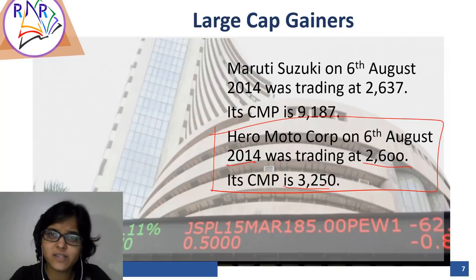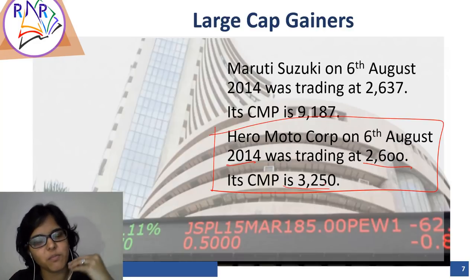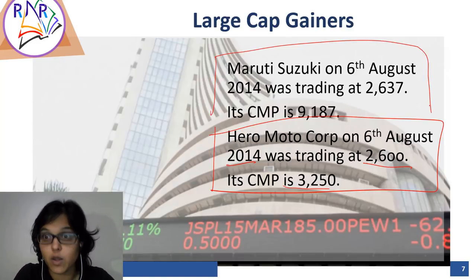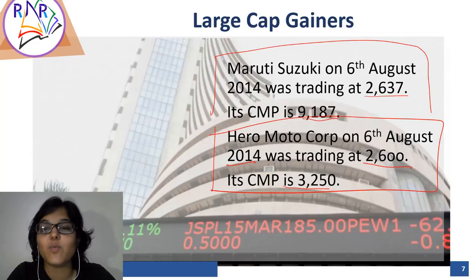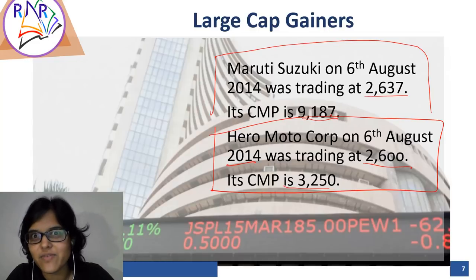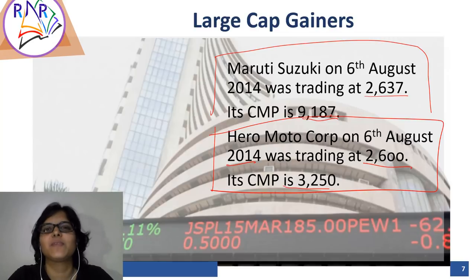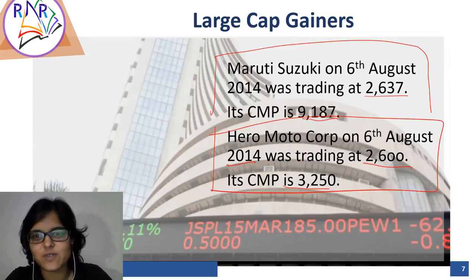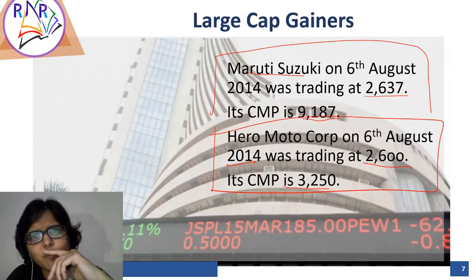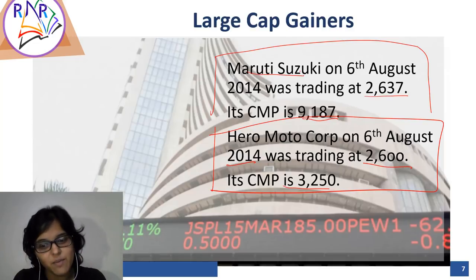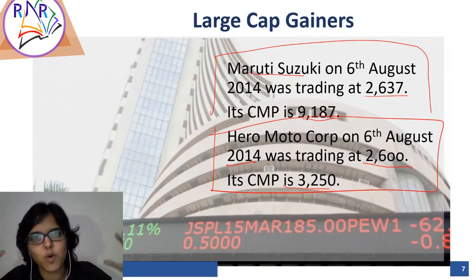Yeh hi funda har baar chalega kya? Toh not necessary. Koi koi large cap aisi bhi ho sakti hai jo bahut zyada badia perform kare - and isi ka classic example is Maruti Suzuki. 4 saal pehle it was trading at 2,600, but its current market price on Friday was 9,187 friends. This is more than three times - three and a half times ke aas paas yeh pahunch gaya share pichle 4 saal mein. So it has given such a huge return. Toh kya Maruti Suzuki large cap company nahi hai? To hai! Toh risk toh comparatively kam hai, but returns toh bahut zyada de rahi hai.